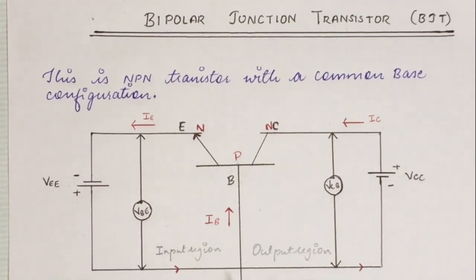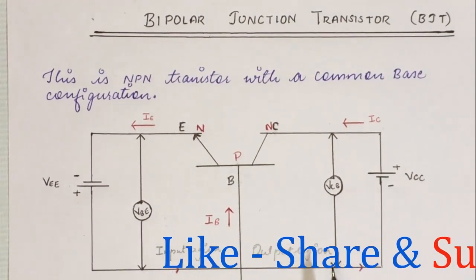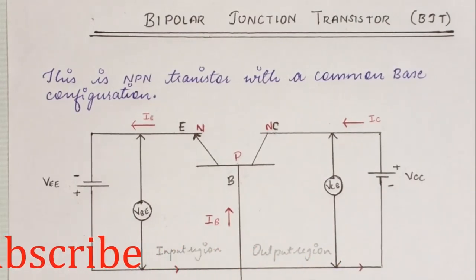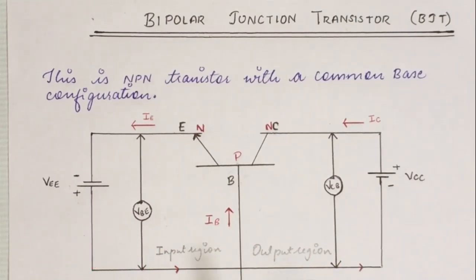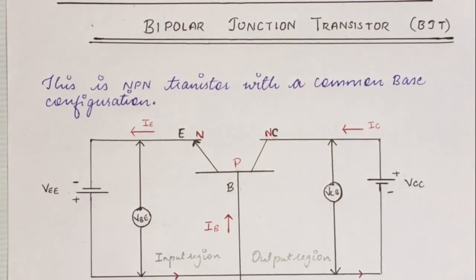This is an NPN transistor with a common base configuration. Here base is common between the input circuit and the output circuit. The operation is done in active mode, and we know that active mode is the mode in which the transistor is used as an amplifier.